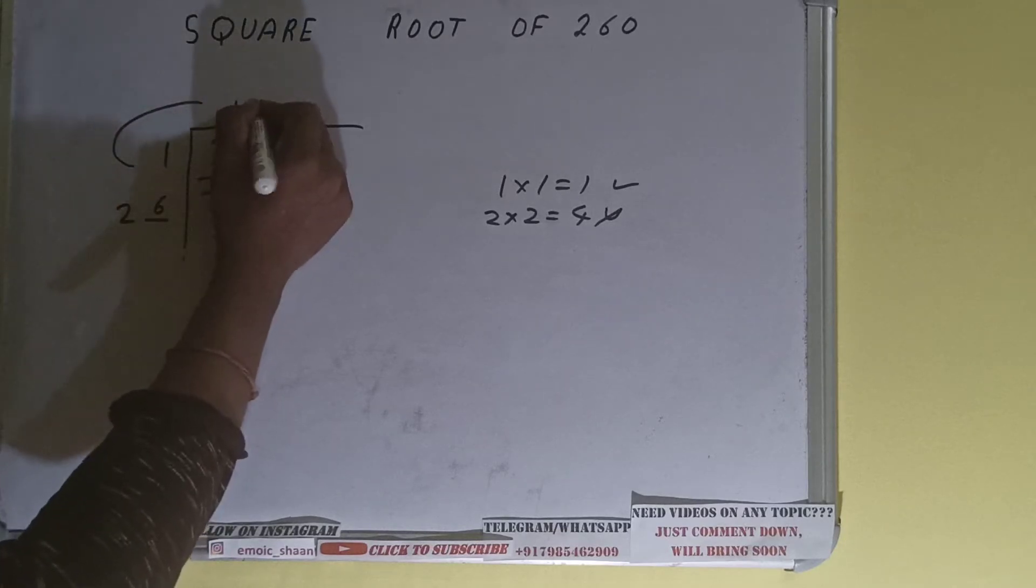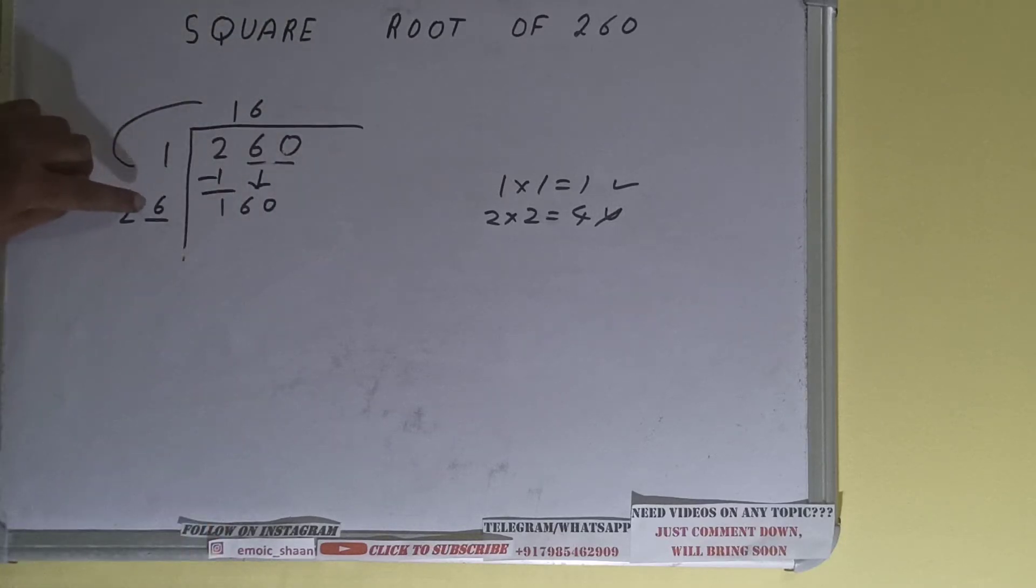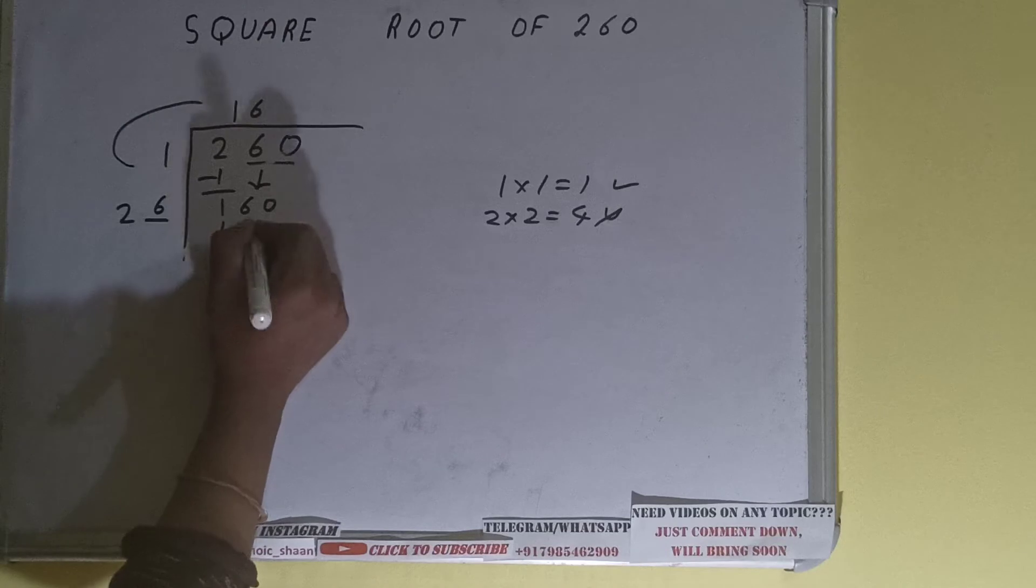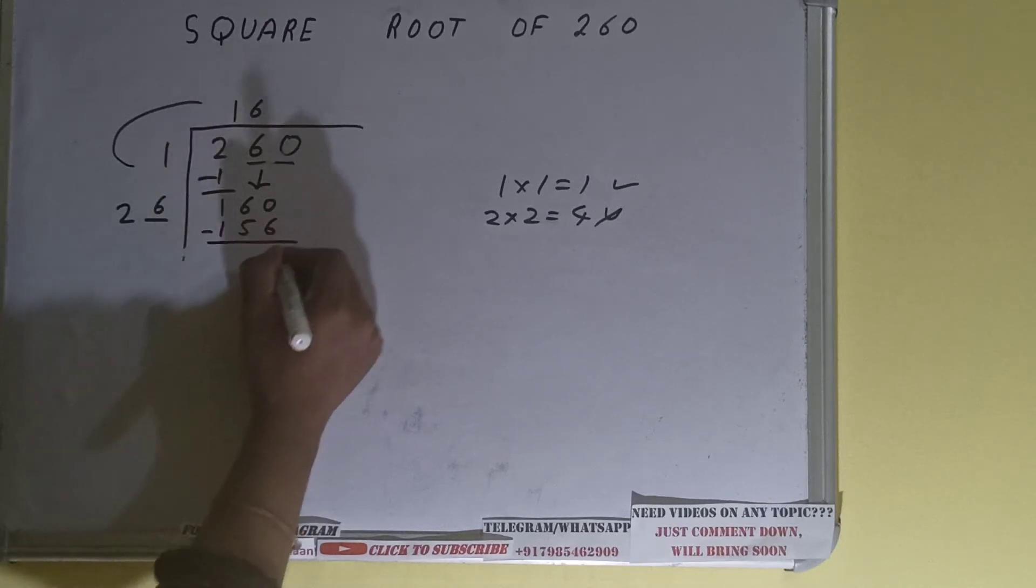Now we can try six times. Six here and six here. Remember same number needs to be placed, whatever number you write here you have to write here also. After putting six in both places we'll get 156. Subtract it.